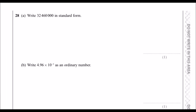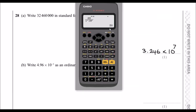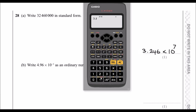Question 28 part a: write 32,460,000 in standard form. Standard form is a number between 1 and 10 times a power of 10, so that's 3.246 times 10 to the power of 7. We can verify: 3.246 times 10⁷ gives 32,460,000.